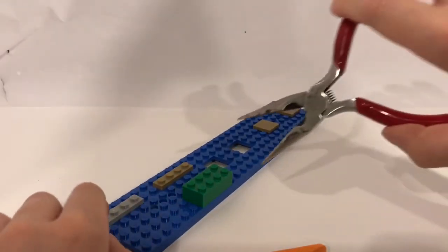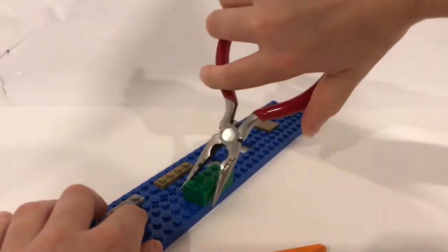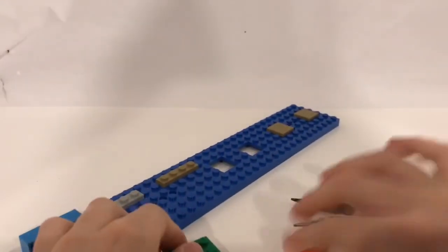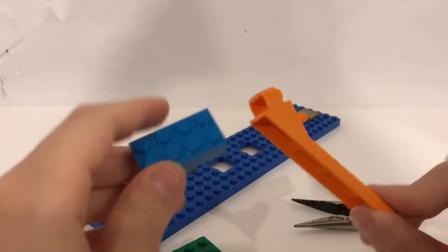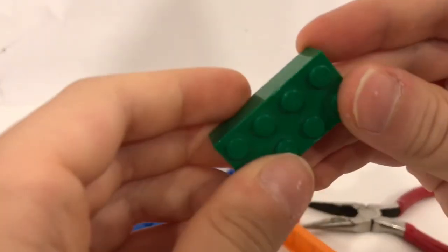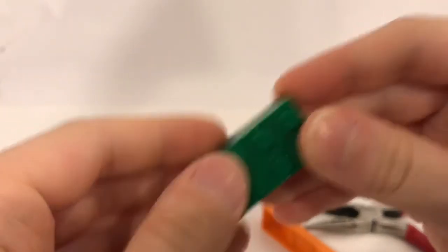Now the needle nose pliers. Pretty easy too. The brick separator did not make a dent, but the needle nose pliers made a small dent right there.